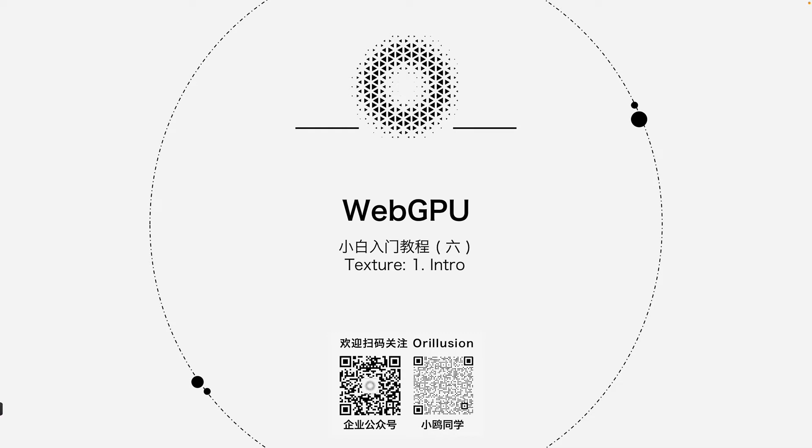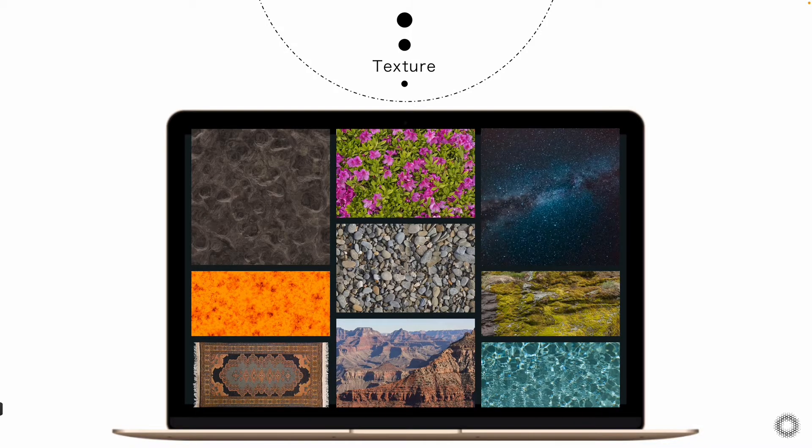So what is texture and why do we need to use this? We have learned Fragment Shader, so we know that GPU displays are actually rendered color of pixels one by one. But in general scenes, it is difficult for us to set the code to simulate color information of a complex scene, such as those irregular patterns and materials in the real world.